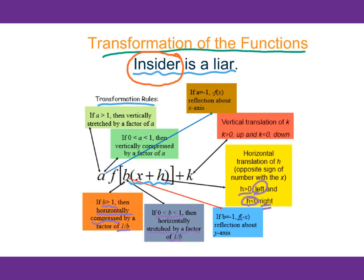Any elements dealing with y will act normally. When a is greater than 1, we vertically stretch by a factor of a. When a is between 0 and 1, we vertically compress by a factor of a. For k positive, go up; k negative, go down. When a is negative 1, reflect across the x-axis. When b is negative 1, reflect across the y-axis.